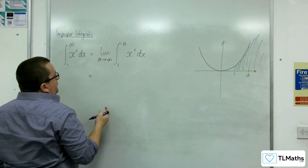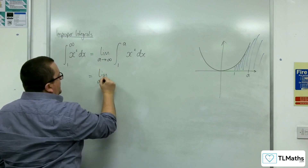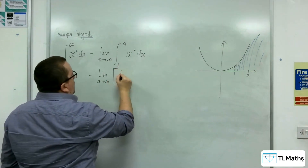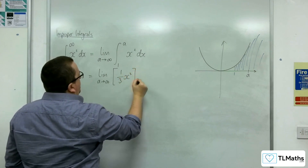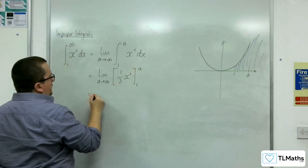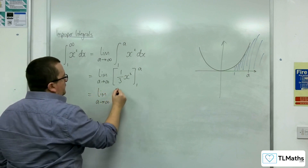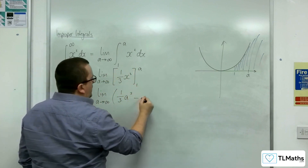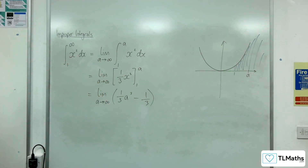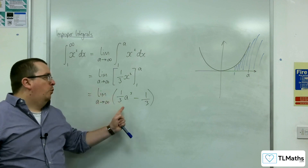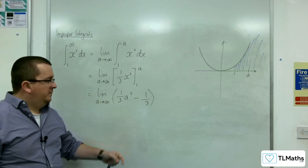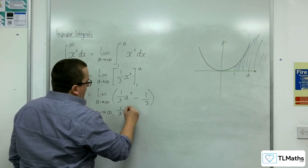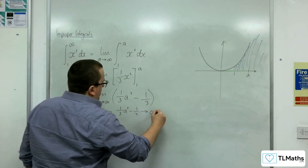So the limit as a tends to infinity needs to be on the outside of my integral. When I evaluate it, I get 1/3 x cubed evaluated between 1 and a. Substituting a in gives 1/3 a cubed; substituting 1 in, we subtract 1/3. So we're looking at the limit as a tends to infinity of 1/3 a cubed minus 1/3. As a tends to infinity, 1/3 a cubed minus 1/3 tends to infinity.